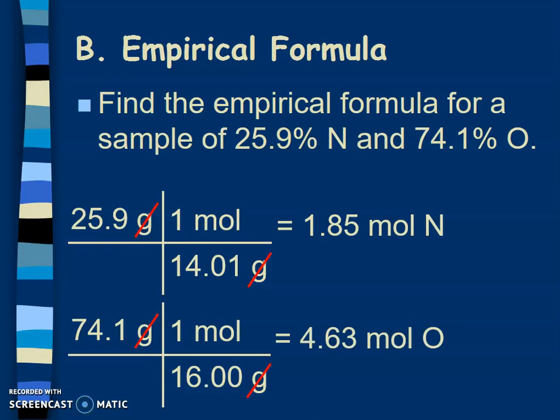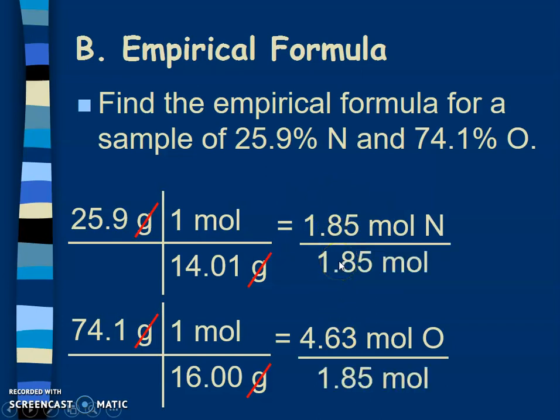Next is step three: we take the smallest mole and divide by it. If I compare these two numbers - 1.85 and 4.63 - 1.85 is smaller, so I'm gonna divide both of them by that number. So 1.85 divided by 1.85 gives me 1. Notice my moles cancel off and I get 1 nitrogen. Same thing down here: 4.63 divided by 1.85, my moles cancel off, and I am left with 2.5 oxygen.